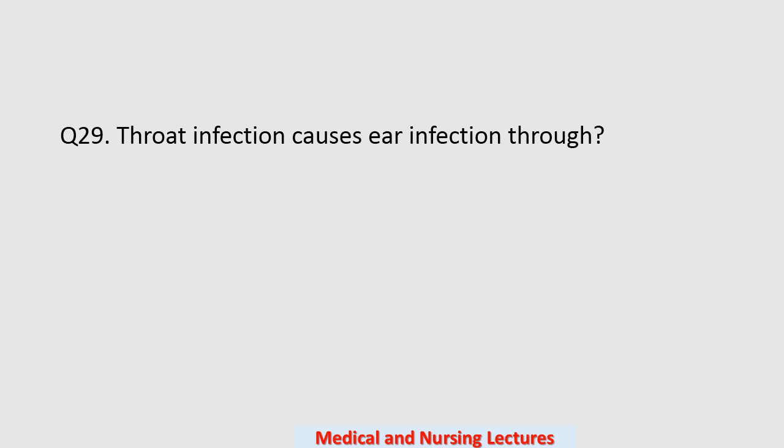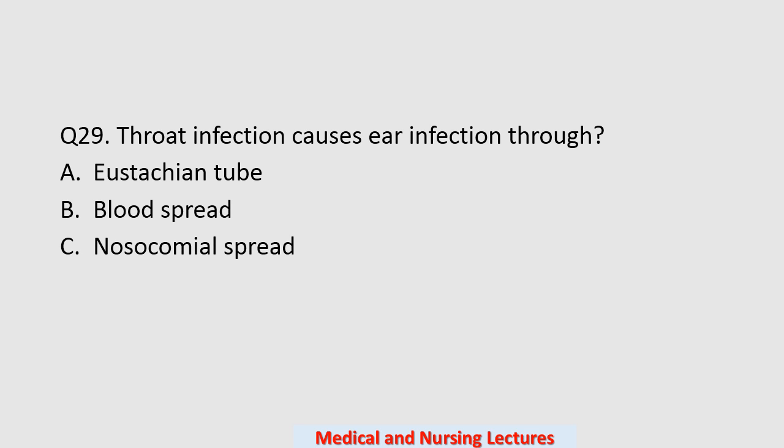Question number twenty-nine: a throat infection causes ear infection through which route? Options are the Eustachian tube, blood spread, nosocomial spread, or simultaneous infection. The correct option is the Eustachian tube, because the Eustachian tube leads from the ears to the throat, so throat infection can cause ear infection through this route.